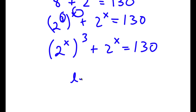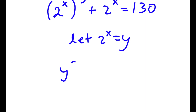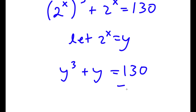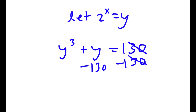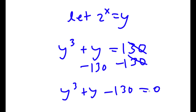Now I'm going to let 2 to the power of x equal the variable y. So now I have y to the power of 3 plus y equals 130. Subtracting 130 from both sides, these two cancel out, so now I have y to the power of 3 plus y minus 130 equals 0.